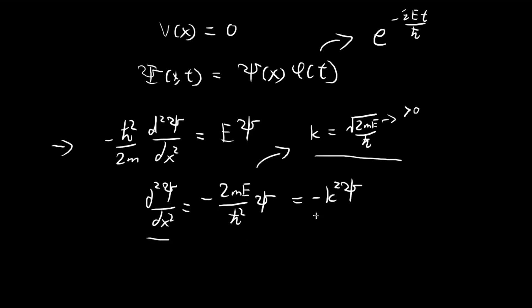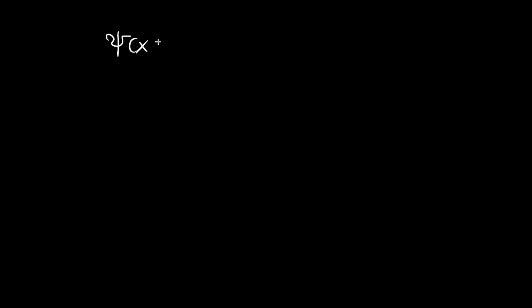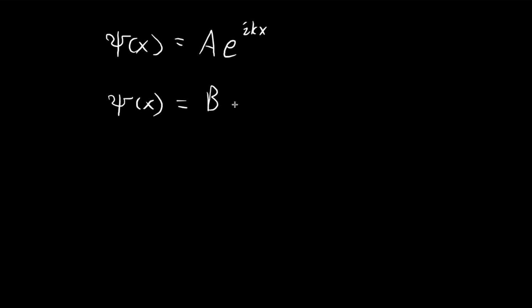Going back to the differential equation, we get the second derivative of ξ(x) equal to negative k² times ξ(x). This is a second-order differential equation, so there should be two linearly independent solutions available to us. The first possibility is that ξ(x) equals some constant A times e to the power of ikx. The second possibility is that ξ(x) equals some constant B times e to the power of negative ikx.